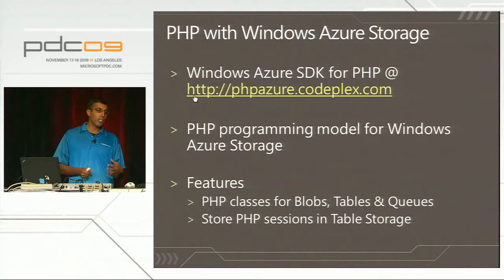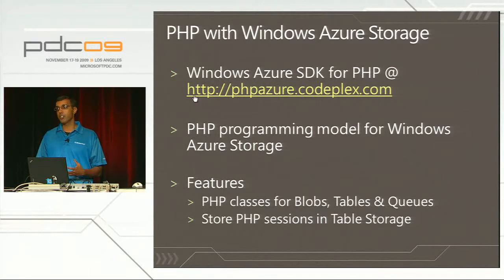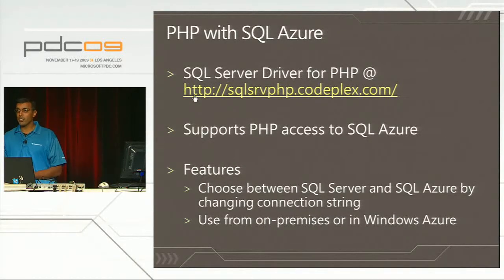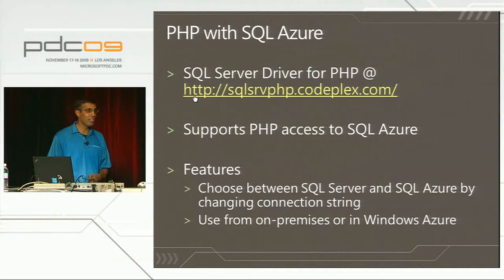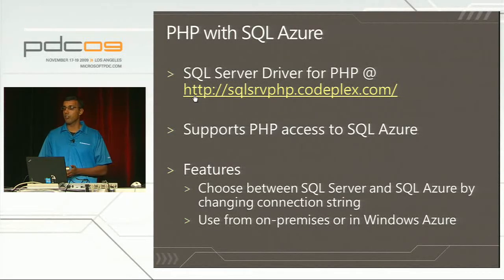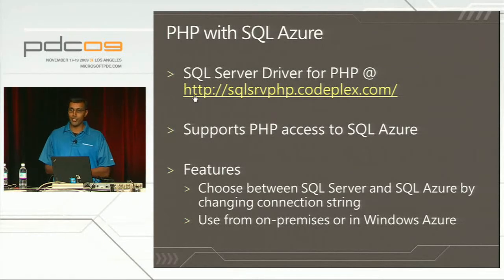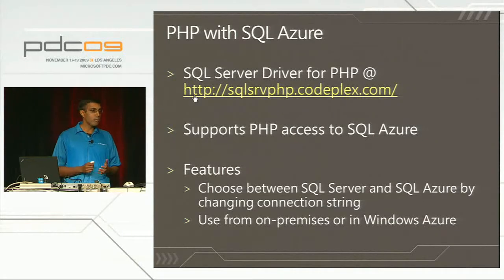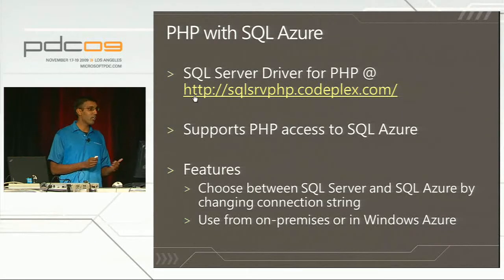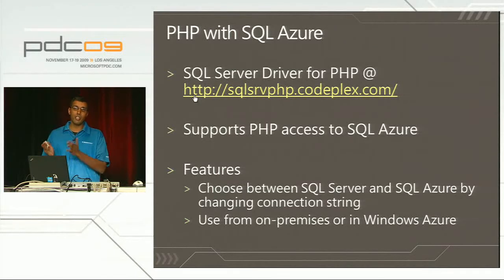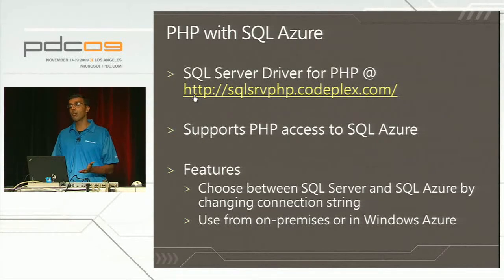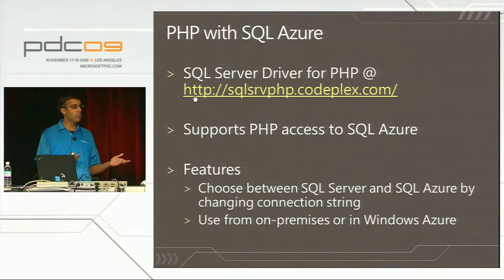To access SQL Azure from PHP, you go to sql server php.codeplex.com. As with the Windows Azure Blob Storage SDK, this gets installed automatically as part of the Eclipse tooling. This supports PHP access to SQL Azure. Interestingly, this is the SQL Server driver, not a SQL Azure-specific driver - meaning you can switch between SQL Server and SQL Azure simply by changing the connection string. So if you had a PHP application written to use an on-premises SQL Server, you could just change the connection string to point to SQL Azure and you're good to go.